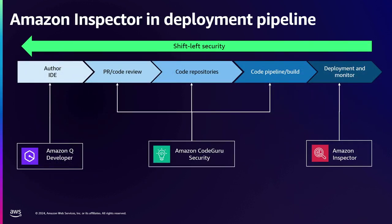Zooming out — where does code scanning fit? In your IDE environment, you can embed static code scanning to detect vulnerabilities. Within your pipeline, whether you're using Amazon CodePipeline or another pipeline, you could use CodeGuru Security to scan for security findings. But sometimes new findings are generated after your CI/CD cycle has passed and code is already running in a Lambda function — that's when you want post-deployment scanning. That's where Amazon Inspector can be used, including detecting new CWEs against already-deployed code.